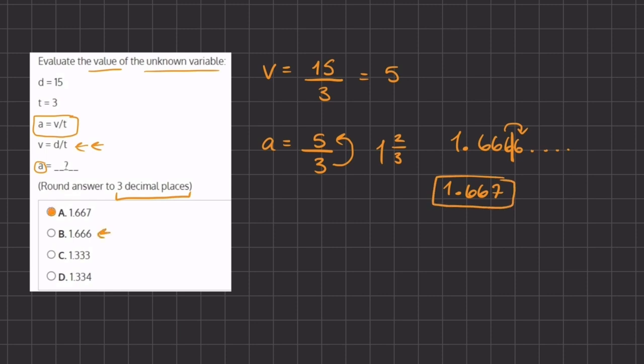And don't get confused with B, which is 1.666. In this answer they just did not round this last number. So our final answer is going to be A.